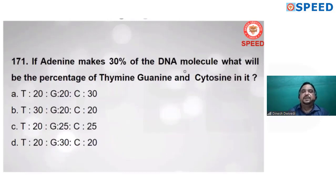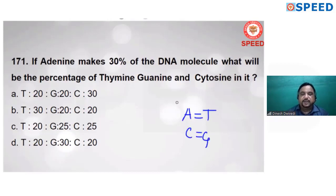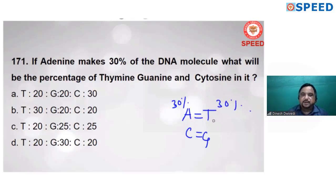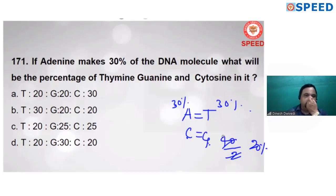If adenine makes 30% of the DNA molecule — according to Chargaff's rule, A = T and C = G. If A = 30%, then T = 30%; together that is 60%. 100% minus 60% = 40% for C and G combined. So cytosine = guanine = 20% each. Therefore: thymine = 30%, guanine = 20%, cytosine = 20%. Alternate B is correct.